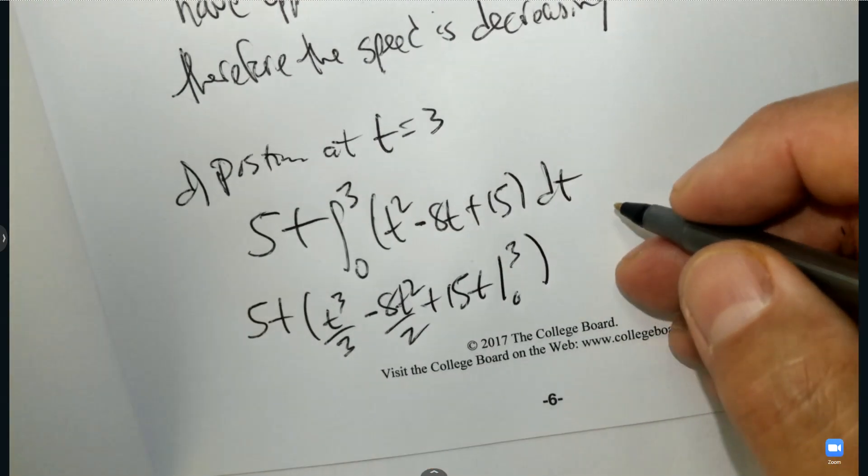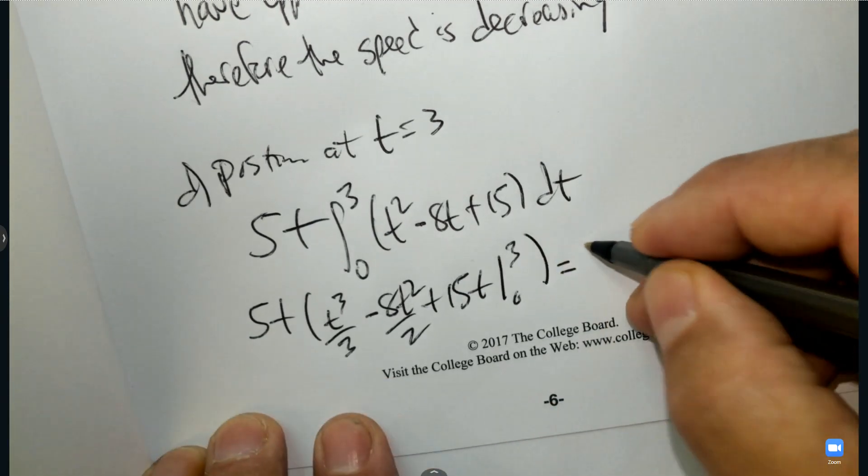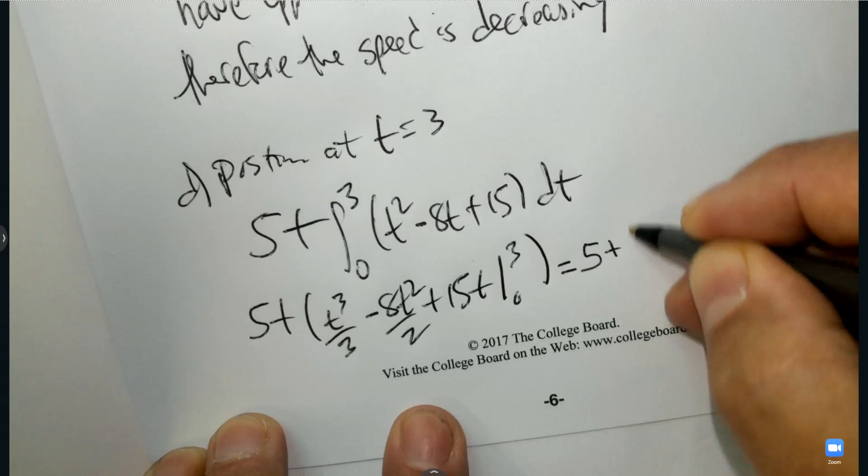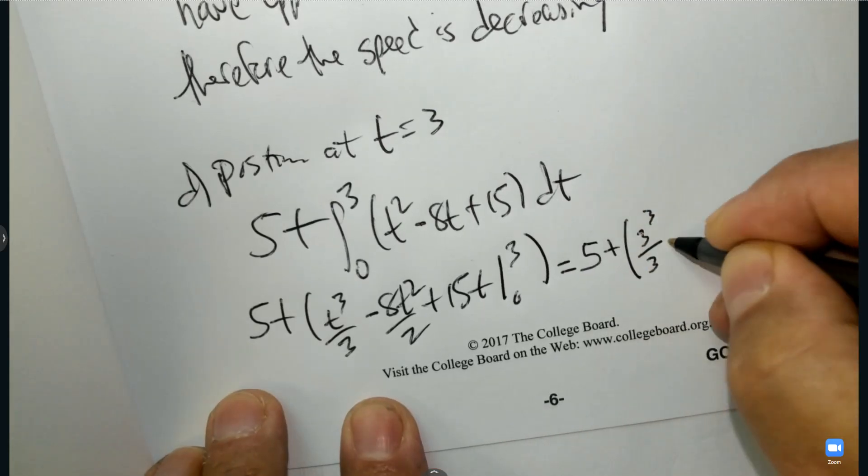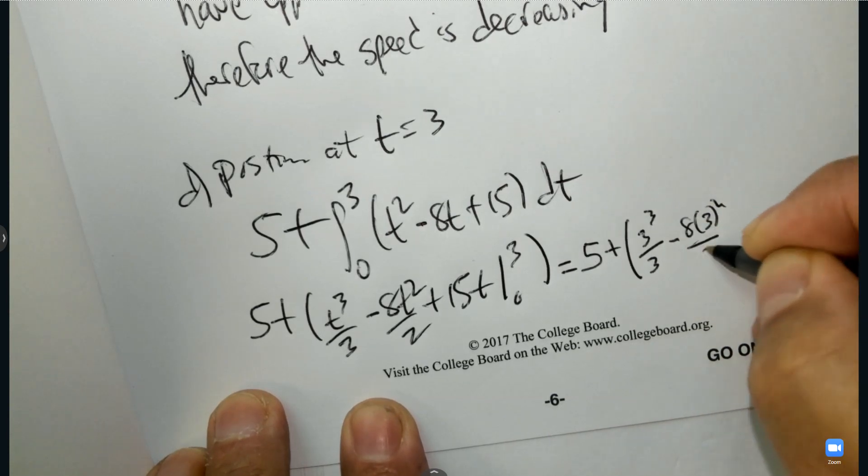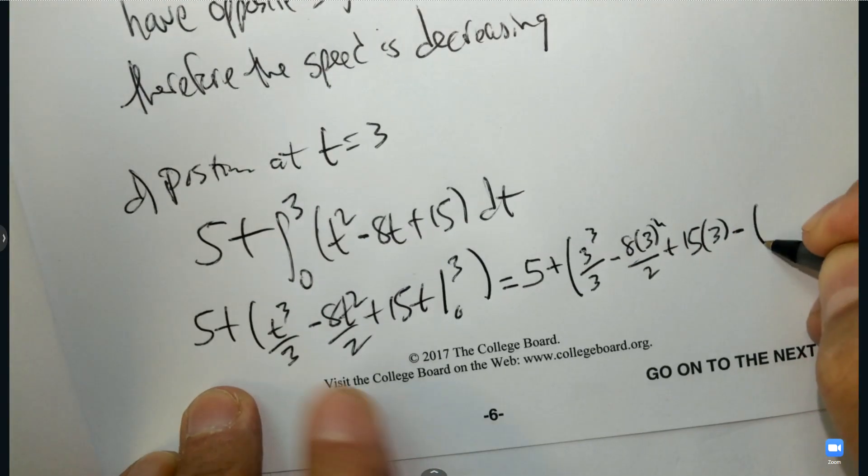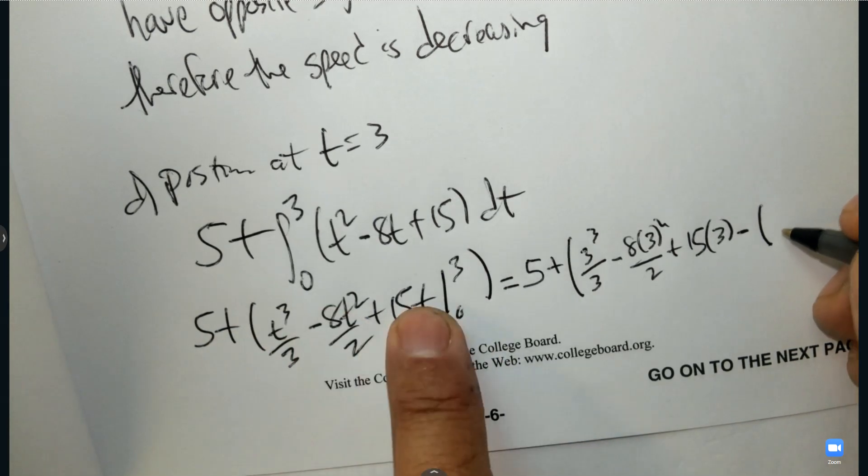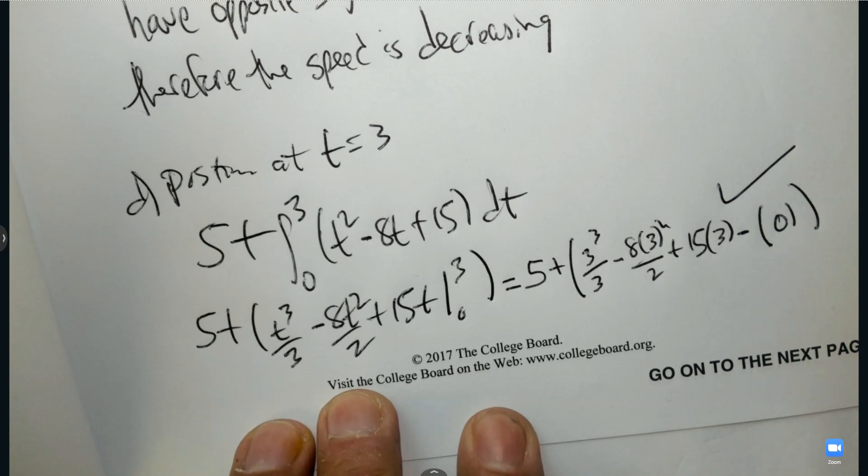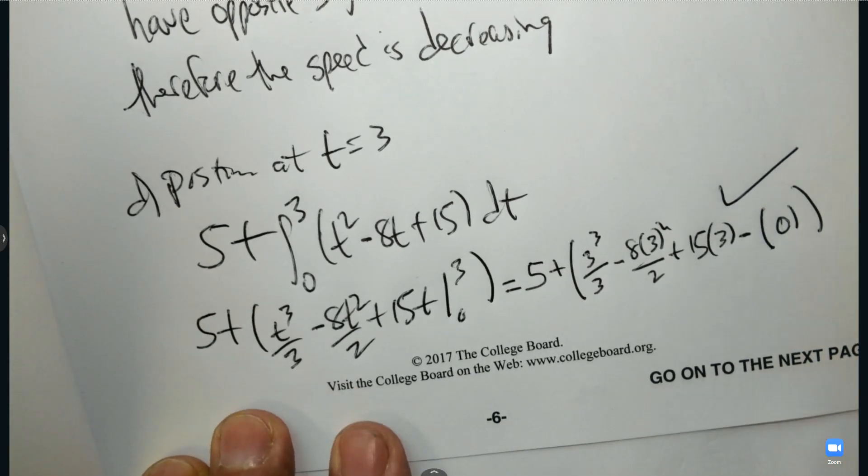So I'm going to plug in 3. I'm not simplifying it. I'm just going to plug in 3. And now I'm going to subtract parentheses. And now when I plug in 0, I'm looking at it like 0, 0, 0. It's 0, right? Like I don't need it. And it's over. So there's the position. And that's all you need. You don't need to simplify it at all. And that's all of it.